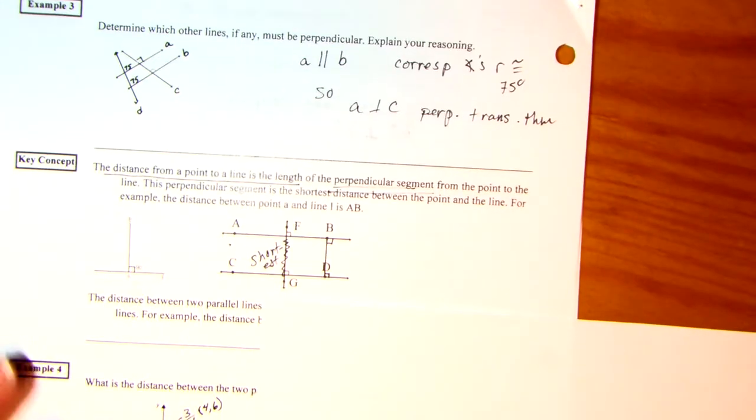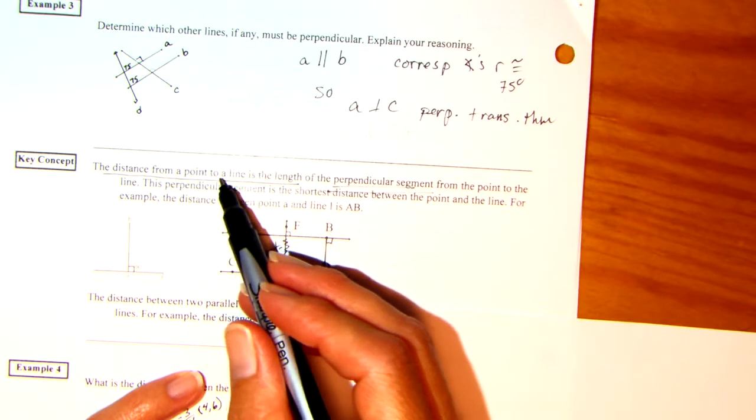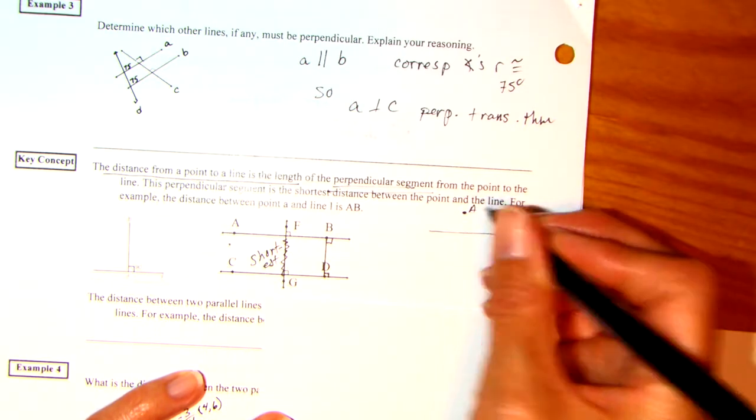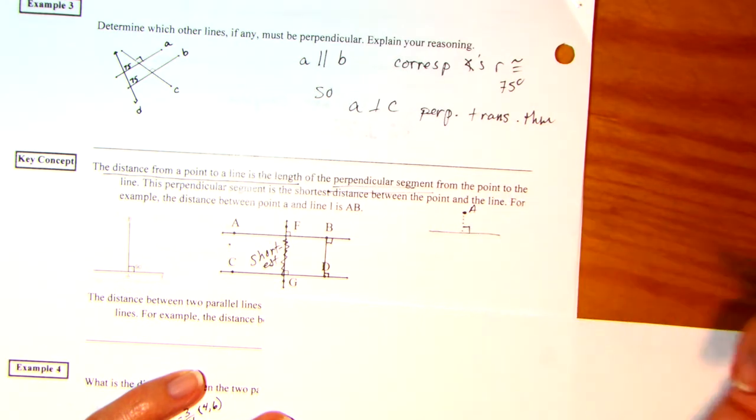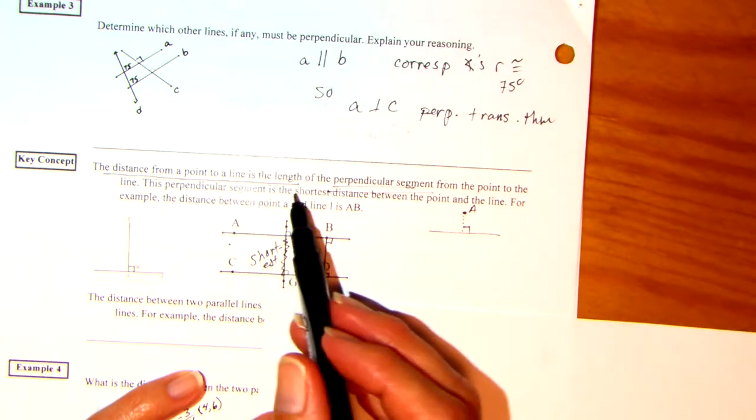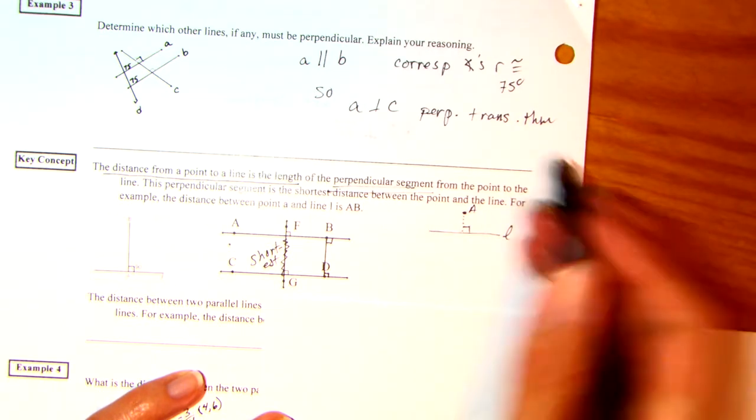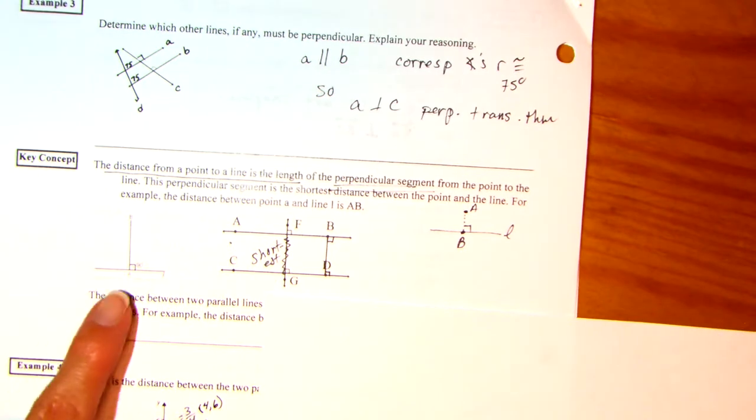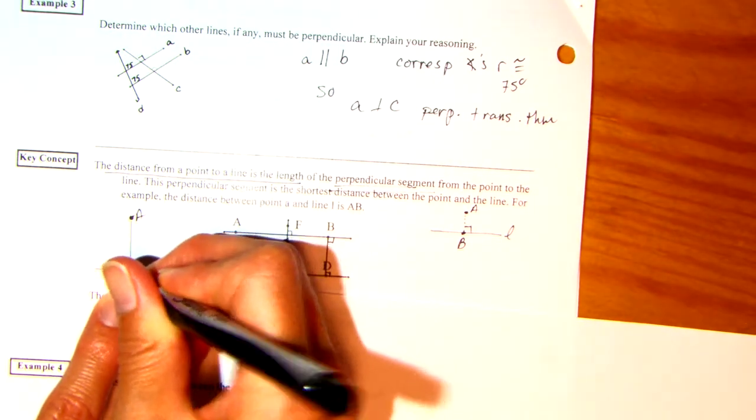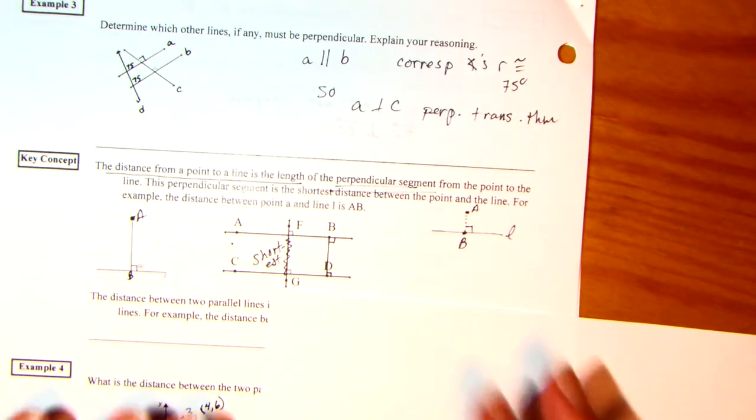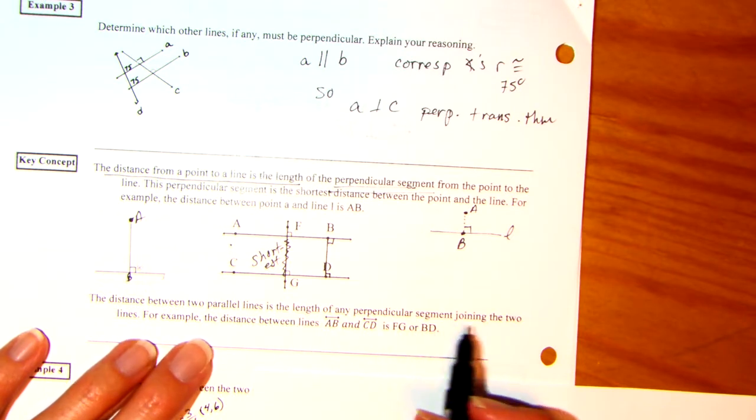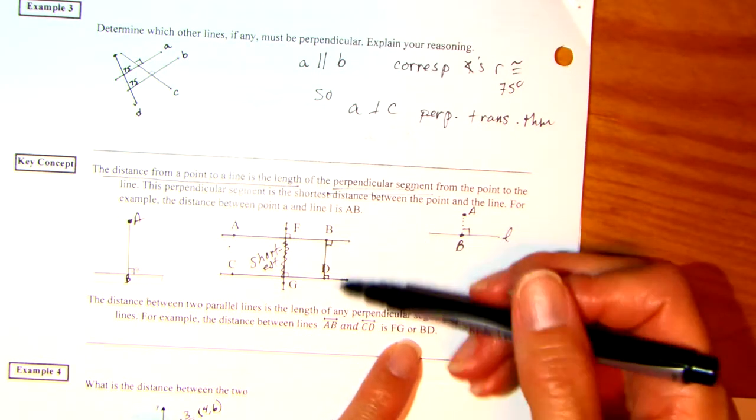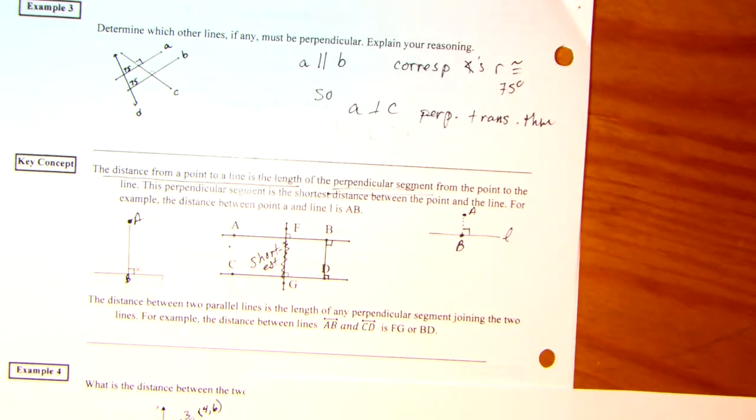All right. So in the other video, I kind of messed this up. I don't know if I was reading this carefully or what. The distance from point A to a line is the length of the perpendicular segment from the point to that line. So if I have a line and a point A, the shortest distance is your perpendicular distance. That's basically what they're saying. Okay. This perpendicular segment is the shortest distance between point A and a line. We'll just call this line L. For example, the distance between point A and line L is AB. So A should be up here. B should be here. Okay.